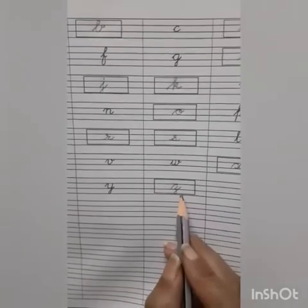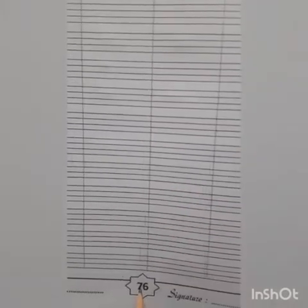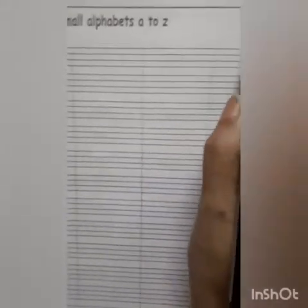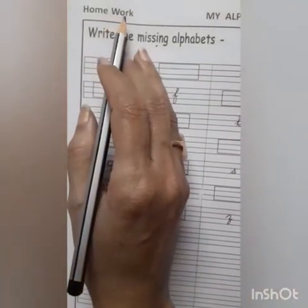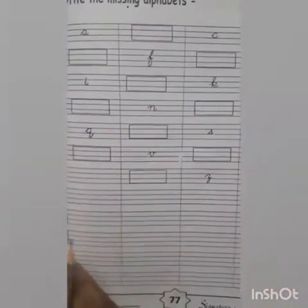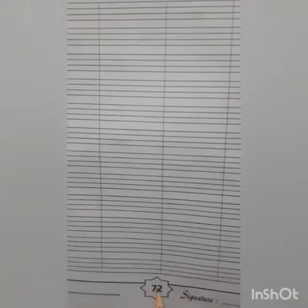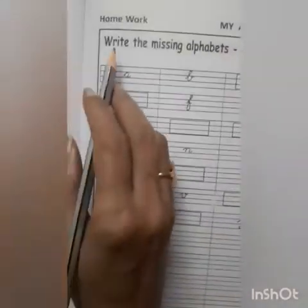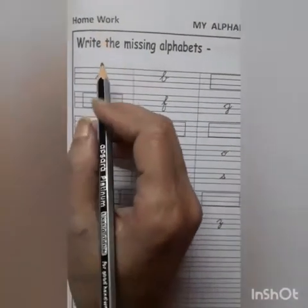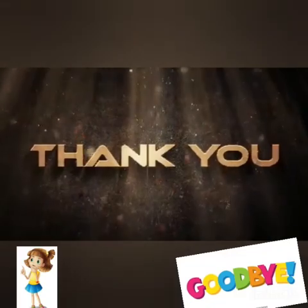Alright children, now come to press number 76. This is your homework page. You will write your homework nicely. And press number 77 — this is also your homework page. You will complete your homework properly. Now come to press number 72 — this is your homework page. And press number 73 — this is also your homework page. So children, you will complete your homework properly. Thank you children, bye bye.